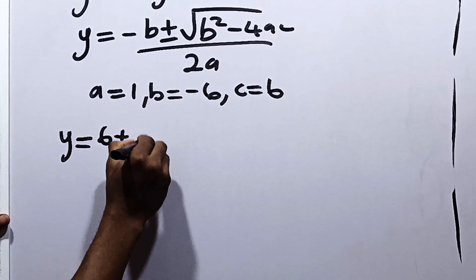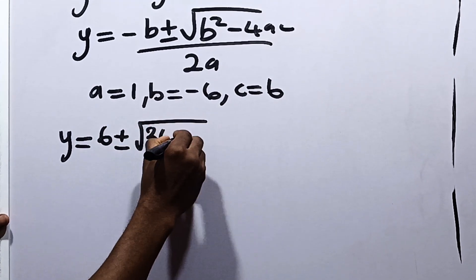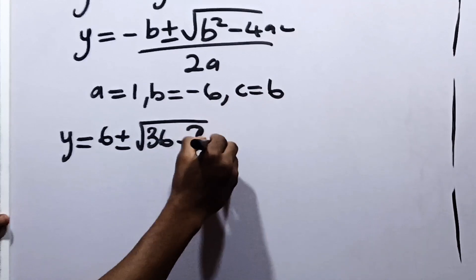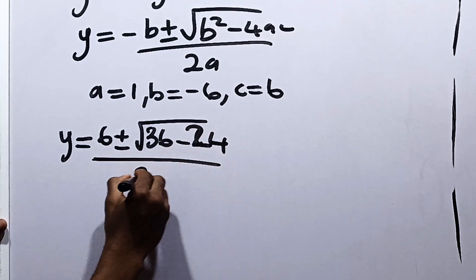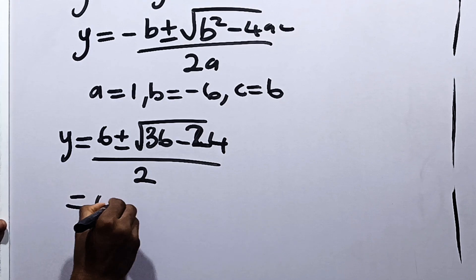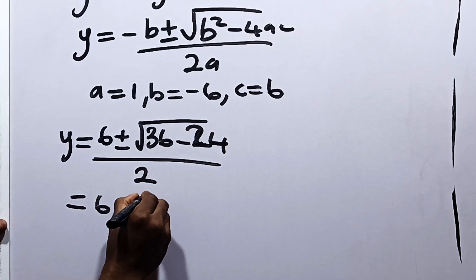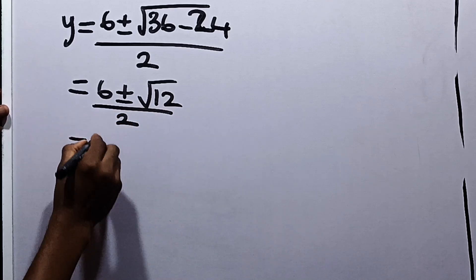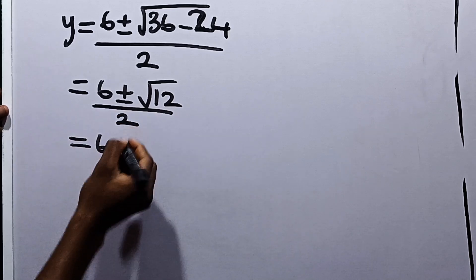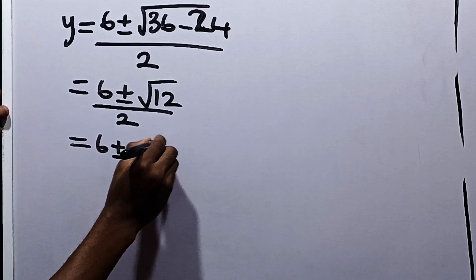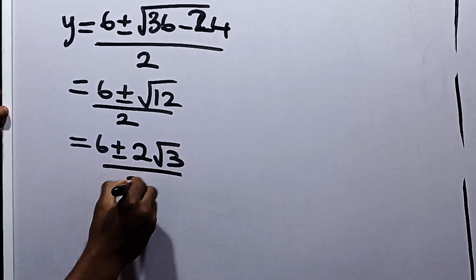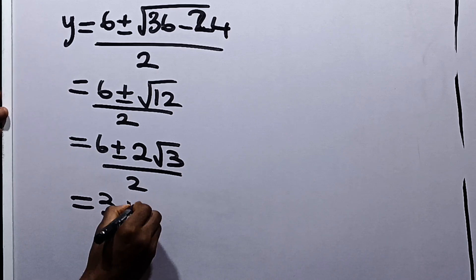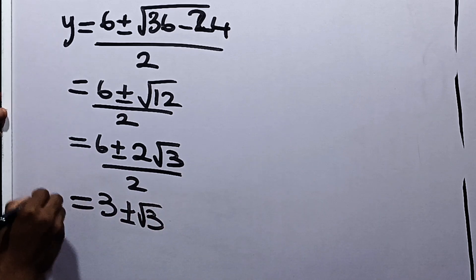Minus 4 times 6 is 24, all over 2 times 1, which is 2. So this is equal to 6 plus or minus root of 12, over 2. This simplifies to 6 plus or minus root of 3, all over 2, which equals 3 plus or minus root 3. That is what our y is equal to.